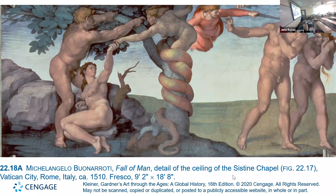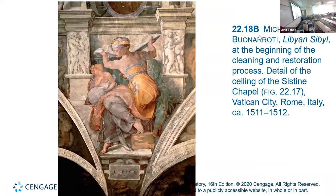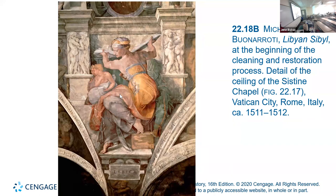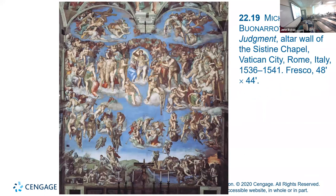More from the Sistine Chapel ceiling: the Fall of Man, Adam and Eve eating from the fruit, getting driven out of Eden. Here it is at the beginning of the cleaning and restoration process — that's what it looked like — and this is what it looked like when they were done. The smoke, the moisture, the deterioration of 500 years — well done.